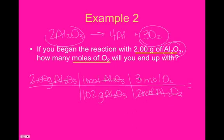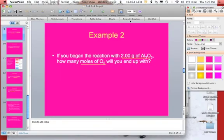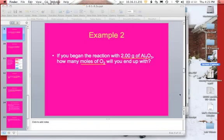And then what I'm left with is 3 divided by 102. So, 3 divided by 102 gives me 0.0294 moles of oxygen. And that will be it for this set of notes. Pick up part 2 right where this one left off.